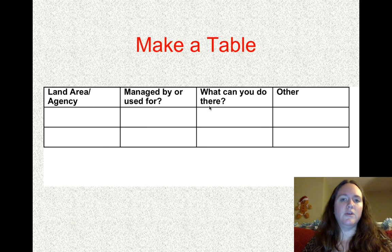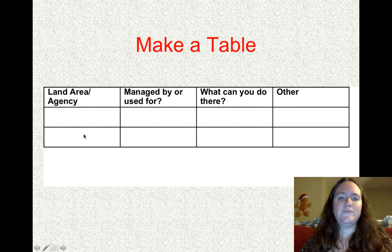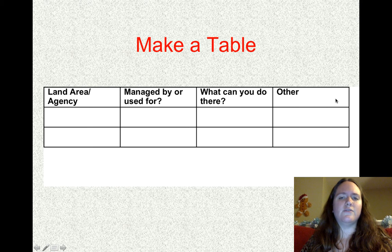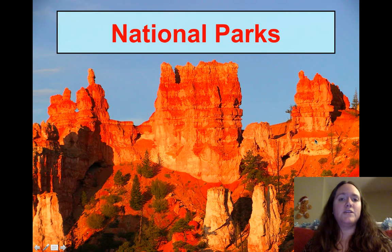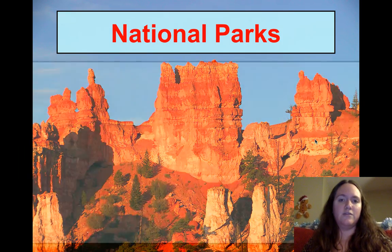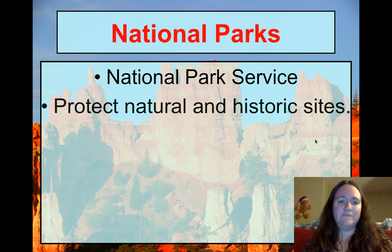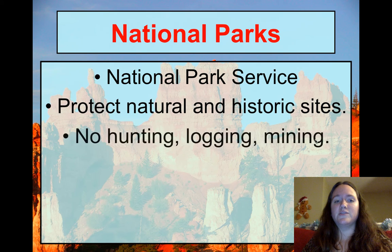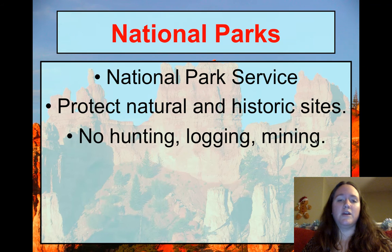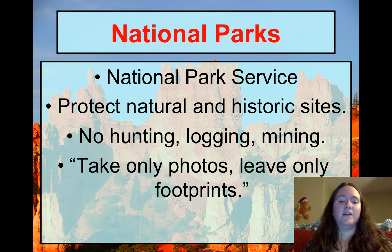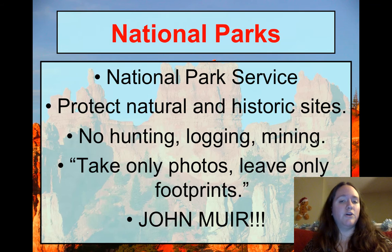Make a table with columns for land agency, who manages it, what you can do there, and any other important notes. First: National Parks, managed by the National Park Service. The purpose is to protect natural and historic sites. You cannot hunt, log, or mine, but you can visit. You really can't take anything — the idea is to take only photos and leave only footprints, as John Muir said.